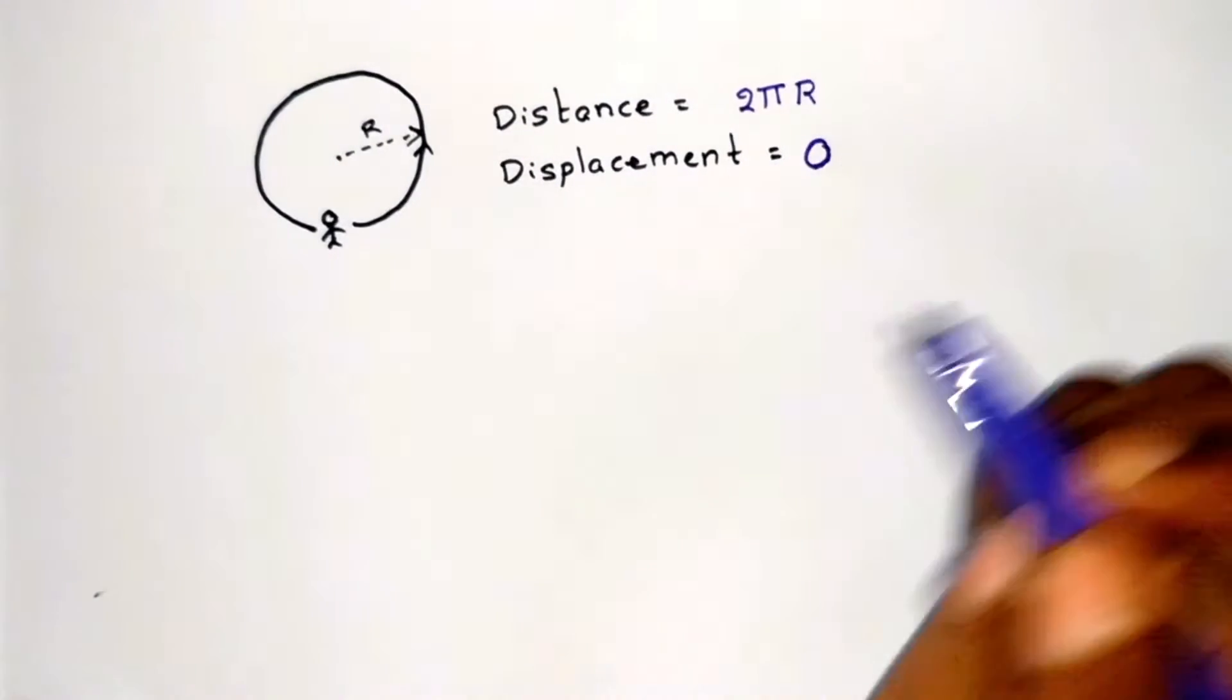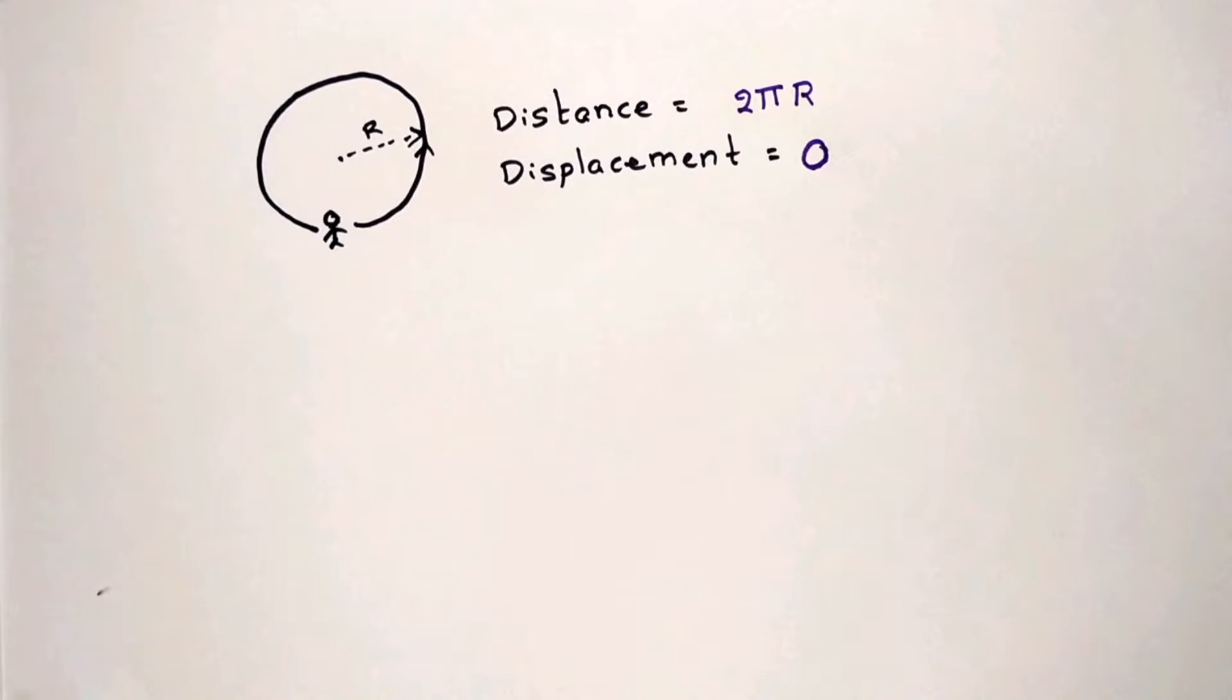So the answer is: since the initial and final positions are equal, displacement will be equal to zero. The distance is equal to the perimeter of the circle, which is equal to 2πr.